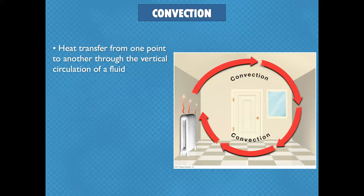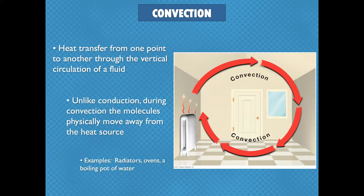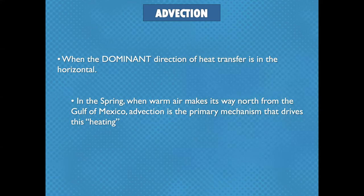Convection — maybe you have a convection oven or old crackly radiators in your house. It's a loop: heat transfer from one point to another through a fluid, which can be air or a pot of boiling water. Advection is when the dominant direction of heat transfer is horizontal. Think about the first really warm spell in spring — that air is coming from the Gulf of Mexico where it's warmer. That's advection.